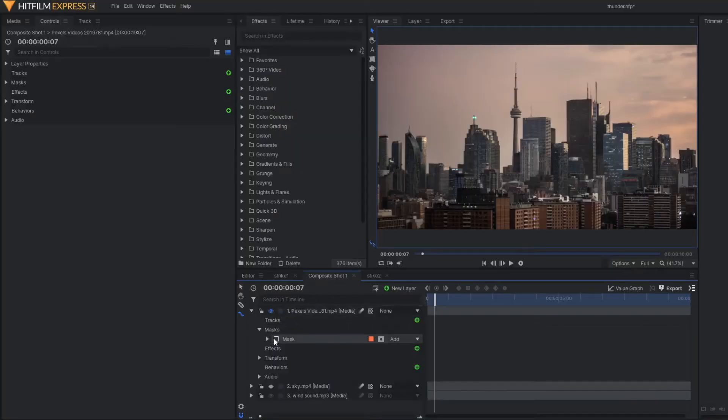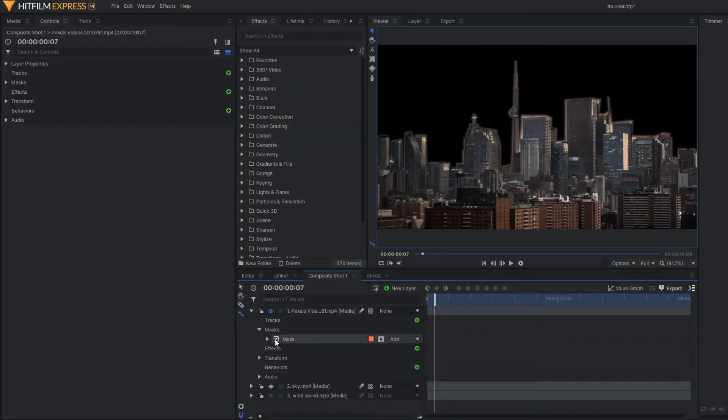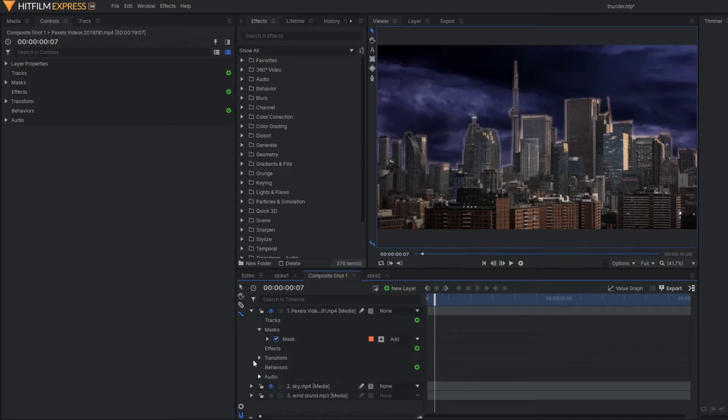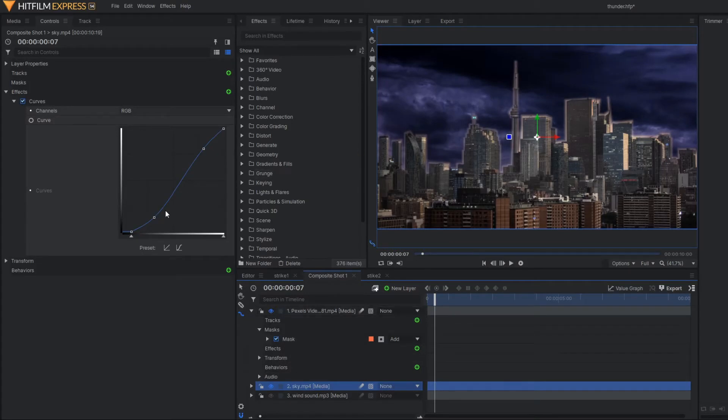Well, I already made a dedicated video on this. So in sky replacement, you have to draw a freehand mask over the sky and you just remove it. And after removing it, you simply place a new sky over there with proper color correction, feathering and other effects. So here, the main principle behind the sky replacement is the masking.